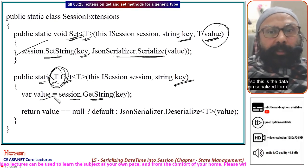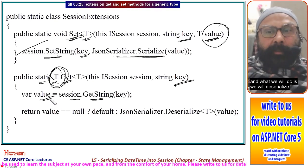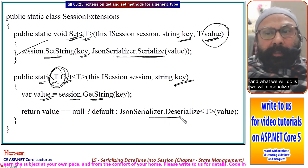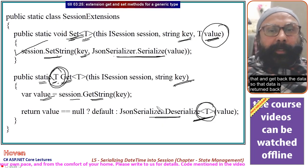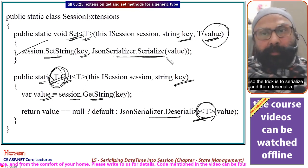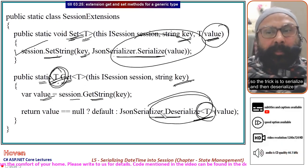So this is the data in serialized form and what we will do is we will deserialize that and get back the data. So that data is returned back. So the trick is to serialize and then deserialize.